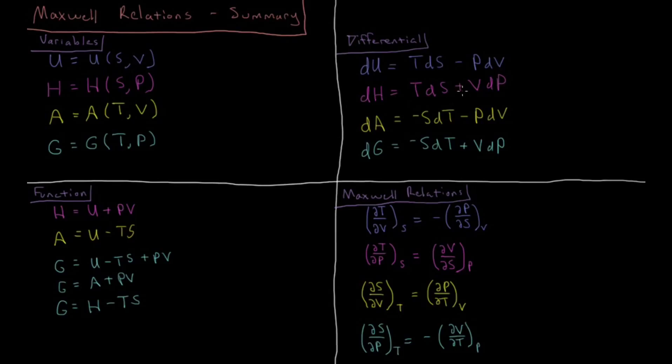The enthalpy is TdS plus VdP, transforming conjugate variables P and V. The Helmholtz energy is minus SdT minus PdV, transforming the conjugate variables T and S. And the Gibbs energy dG is going to be minus SdT plus VdP, transforming both pressure-volume and entropy-temperature conjugate variables.